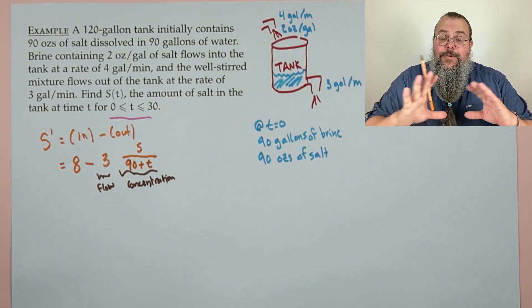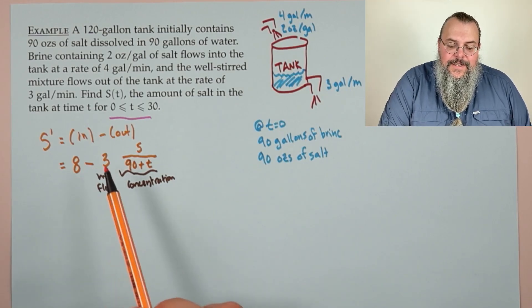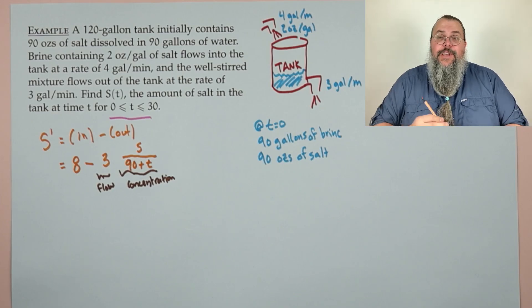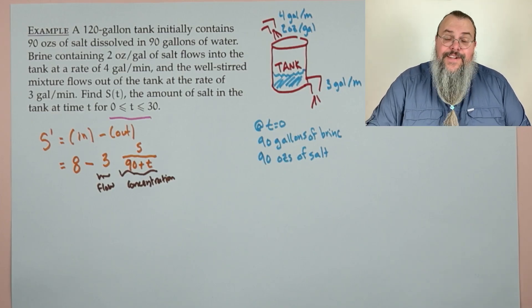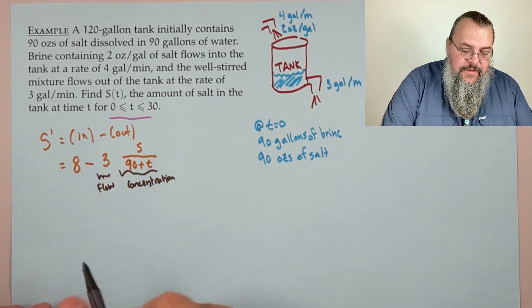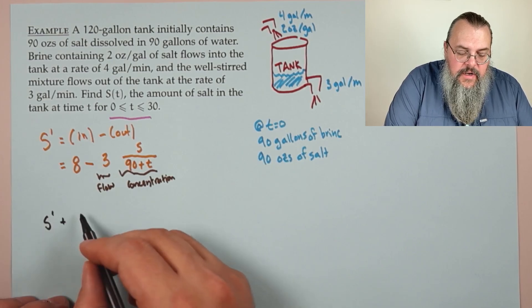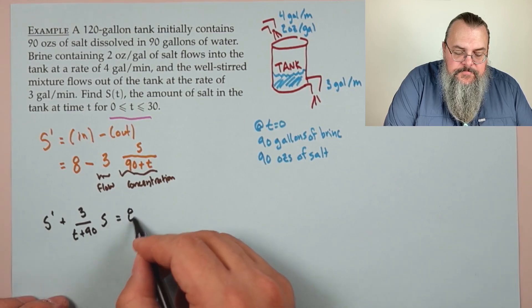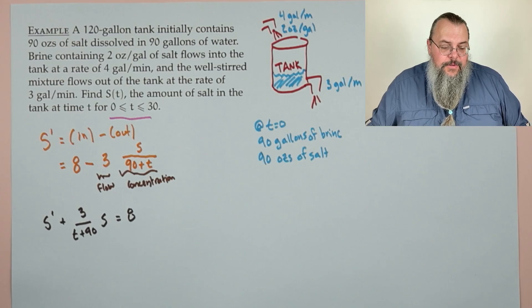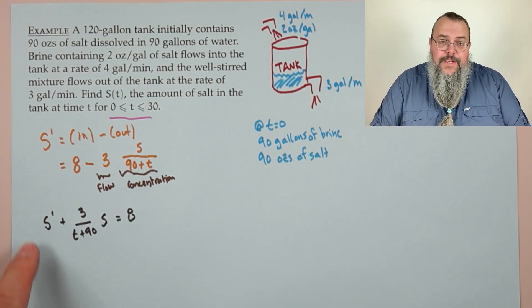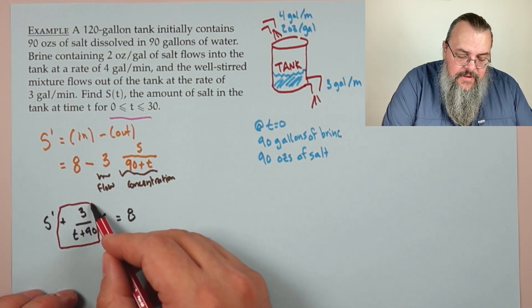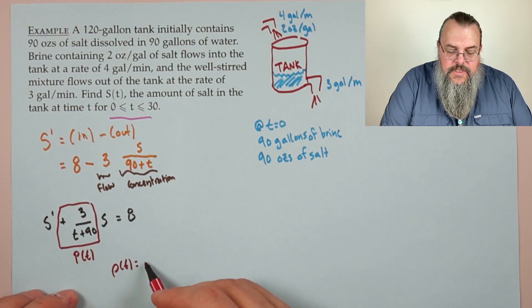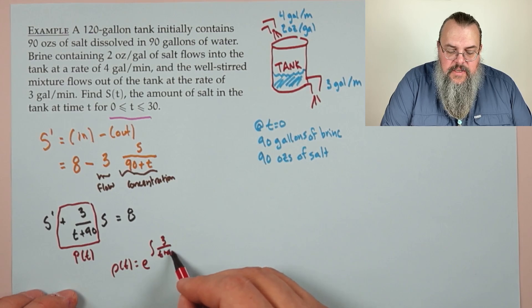The differential equation is: S′ = 8 − 3S/(90 + t), or rearranged: S′ + 3/(t + 90)·S = 8. This is linear — we see S′ and S — so our integrating factor tools apply. The coefficient in front of S′ is already 1.